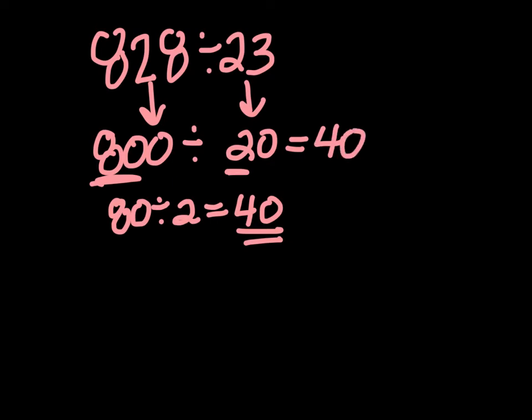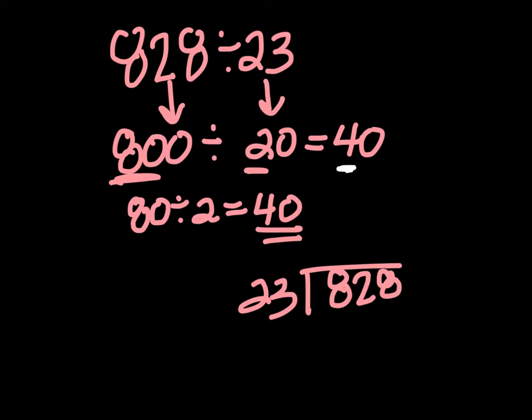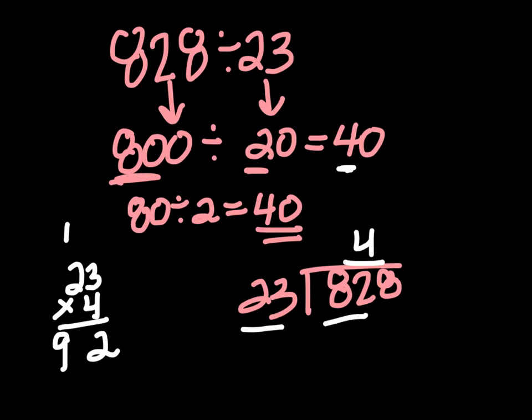So now we can use that knowledge, and we can actually divide 828 by 23. So using what we know about our estimation, let's think about what our first number might be when dividing. So my first number might be 4. Let's go ahead and put the 4 there and see what happens. So if I multiply 23 by 4 to get an answer of 92. If you look at 92 and you look at 82, 92 is bigger than 82, so that is not going to work. So what we have to do is go down a number. So we are going to go to 3 instead of 4.